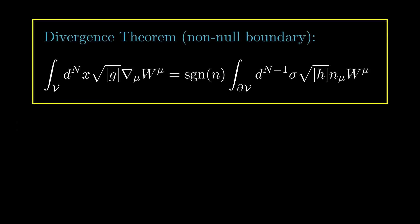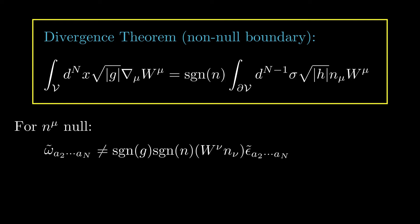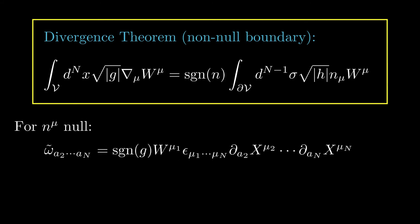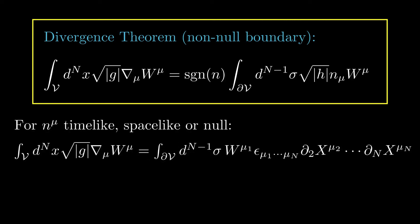In this form, the divergence theorem assumes that the boundary is not null. If the boundary is null, we can't use the result that omega-tilde equals sign-g times sign-n times W-nu n-nu times epsilon-tilde. Instead, we must return to the earlier result for the components of omega-tilde in terms of sign-g, W-mu1, epsilon, and the partial derivatives of x-mu. This leads to a form of the divergence theorem that is always valid, whether the boundary is time-like, space-like, or null.